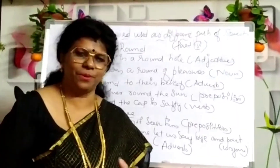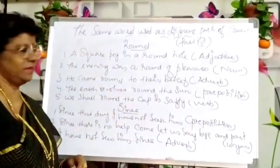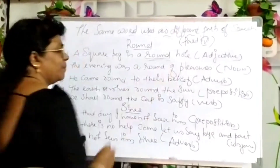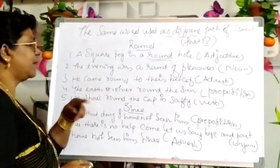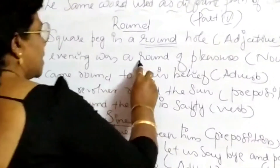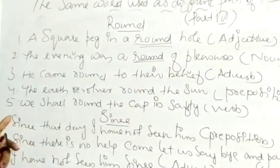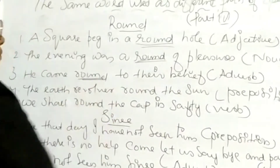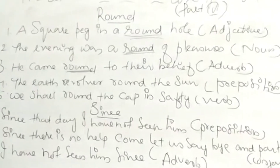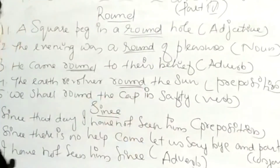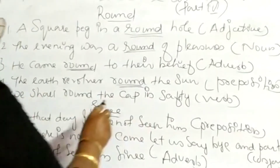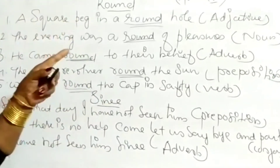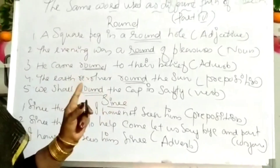Let us go through another word: 'round.' In 'A square peg in a round hole,' round shows an adjective. In 'The evening was a round of pleasures,' round shows a noun. In 'He came round to their belief,' round shows an adverb. In 'The earth revolves round the sun,' round shows a preposition. In 'We should round the cap in safety,' round shows a verb.